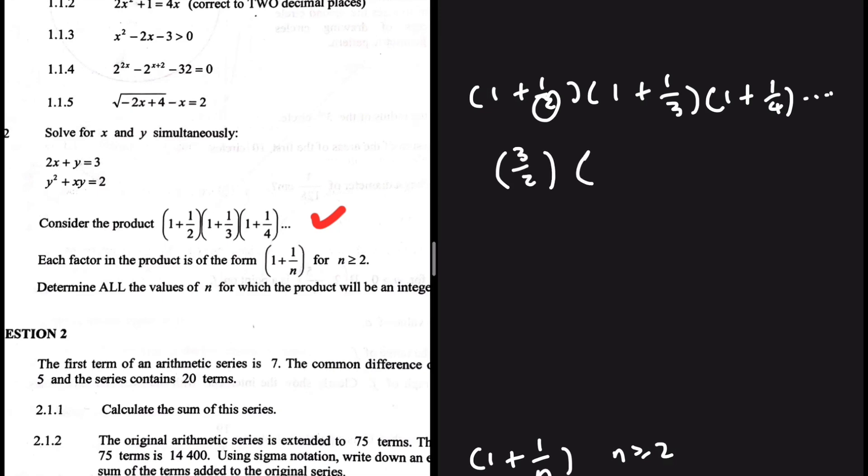And then let's move to the second term. 1 plus 1 over 3, that is 4 over 3. And then the third term, 1 plus 1 over 4, that is 5 over 4. So these are the terms of the product, not the terms of the sequence.